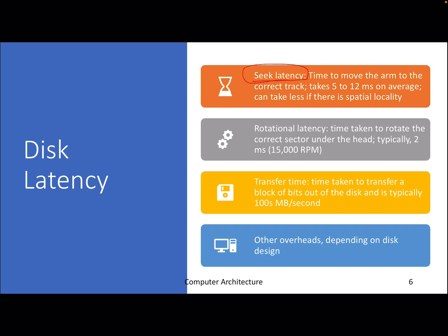The first latency component is seek latency — the time it takes to move to the correct track. Since there are multiple tracks on a surface, this typically takes around 5 to 12 milliseconds. Once you're on a particular track, you need to find the correct sector. An address mapper converts the address from DRAM into the notion of tracks and sectors. Reaching the target sector typically takes around 2 milliseconds, depending on the RPM — how fast the disk is spinning.